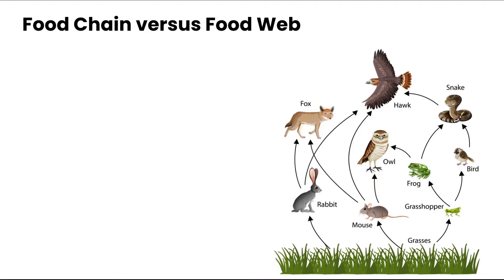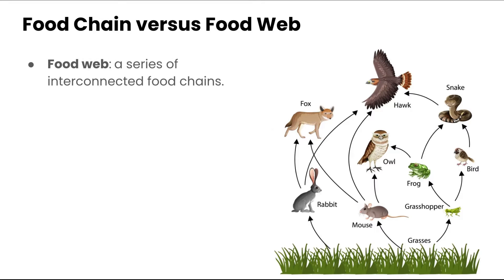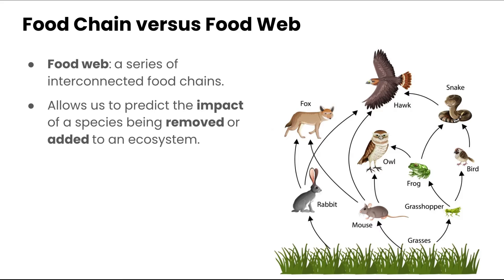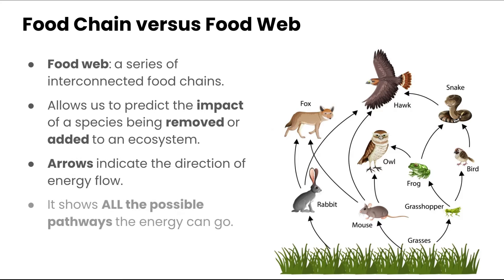One last term: a food web is different from a food chain because it's a series of interconnected food chains. It shows the different connections so we can predict the impact of a species being removed or added to an ecosystem. Arrows indicate the direction of energy flow, and it shows all possible pathways energy can take — for example, from grass it could go to rabbits, mice, or grasshoppers, and from rabbits it could go to foxes, hawks, and so on.